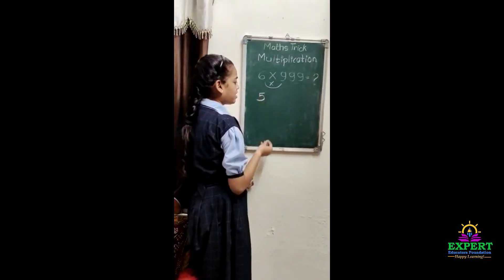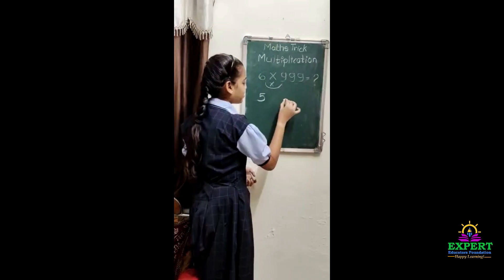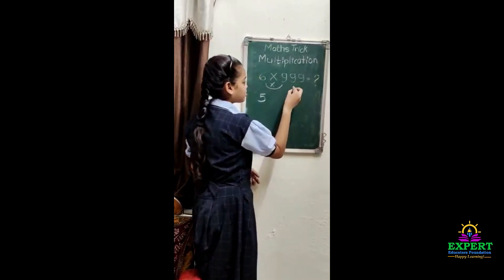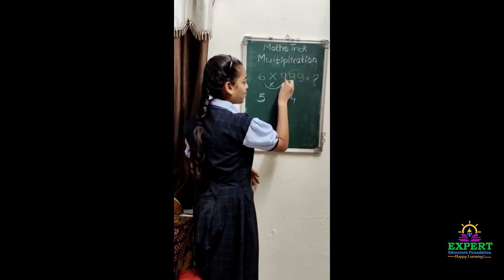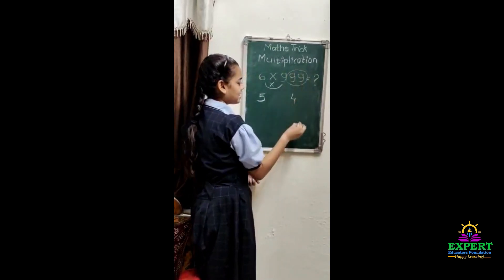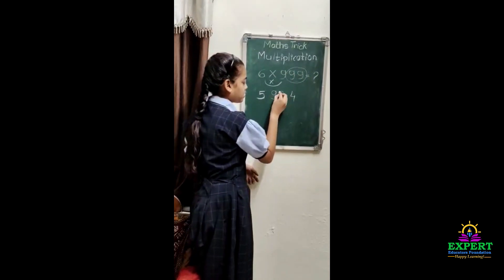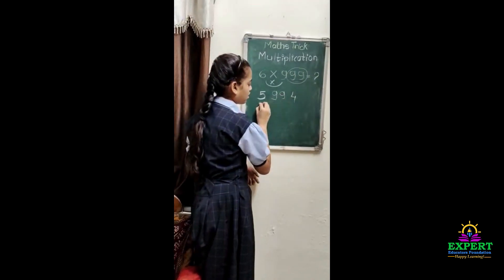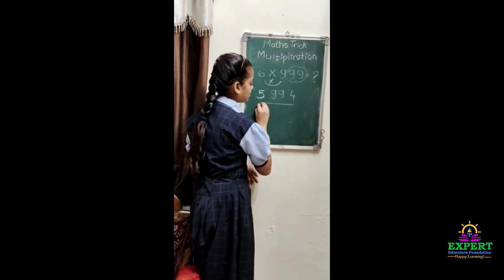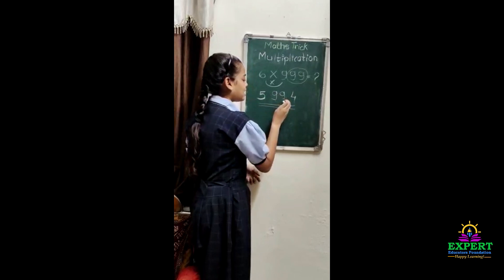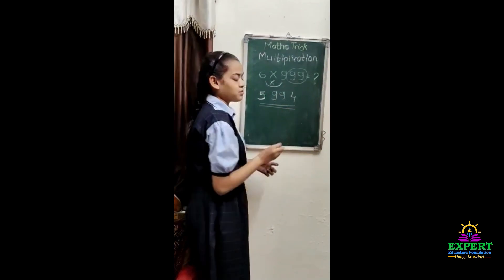So we have to write 4, carry 5, and write 4 again. The remaining 99 has to be written here. So the answer is 5994.